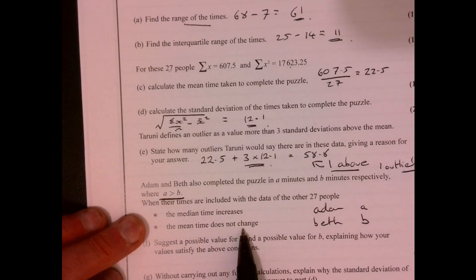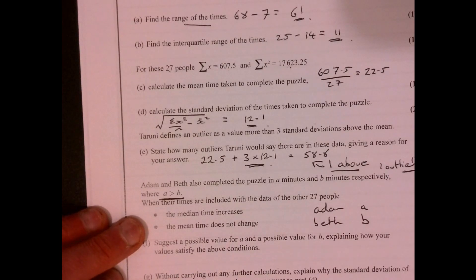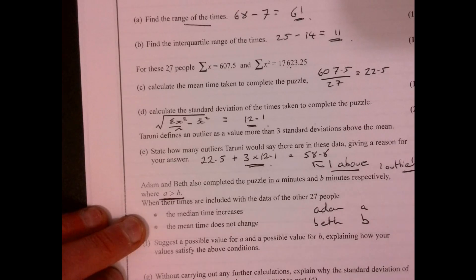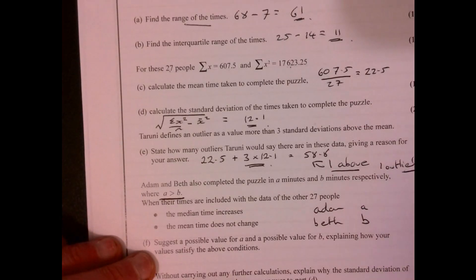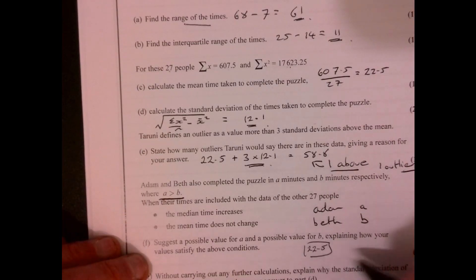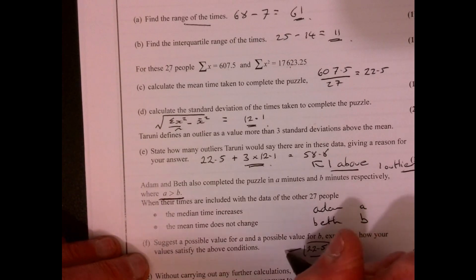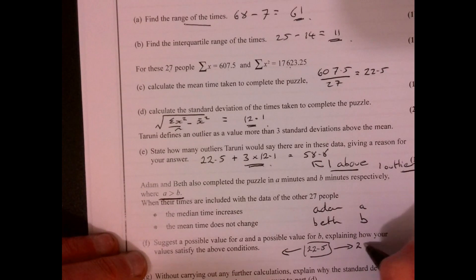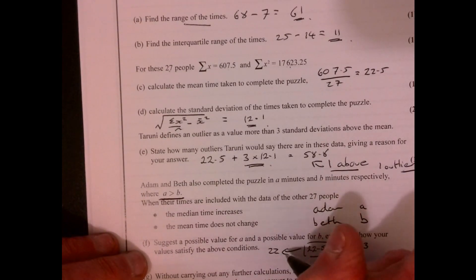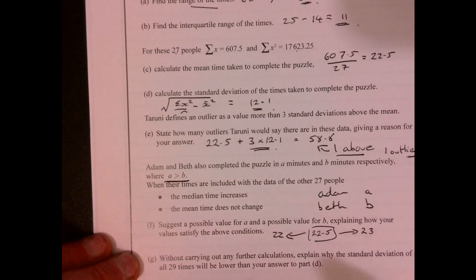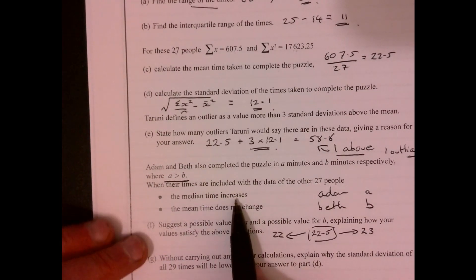The mean time does not change. So if the mean time does not change, then I need to have two points that are equal distance around 22.5, because it's 22.5 at the moment. So I've got to go an equal distance to make sure that they don't change. For example, maybe 23 and 22. That would work. But I wonder how far out we could actually come.